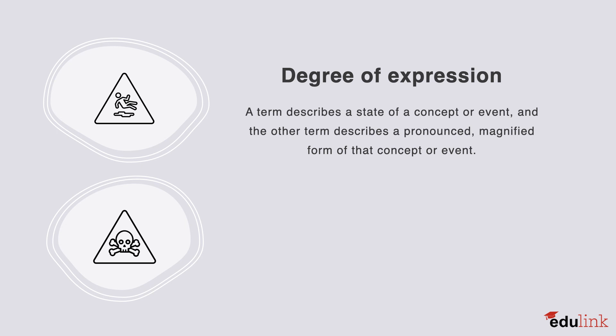The last relation type we'll be talking about is degree of expression. This is when a term describes a state of a concept or event, and the other term describes a pronounced magnified form of that concept or event. For example, dangerous and deadly. Waves and tsunami. Pretty and stunning.